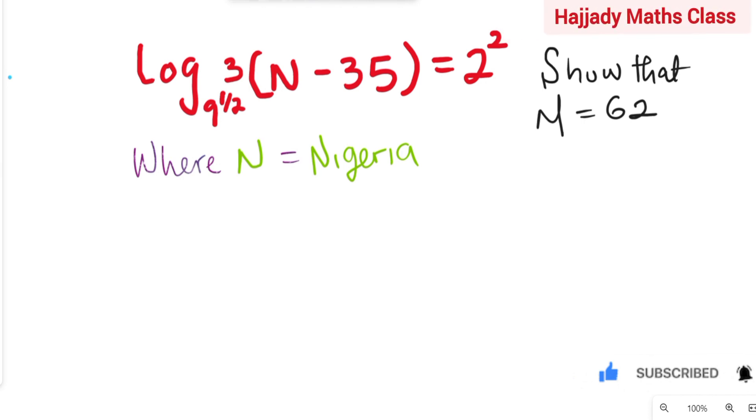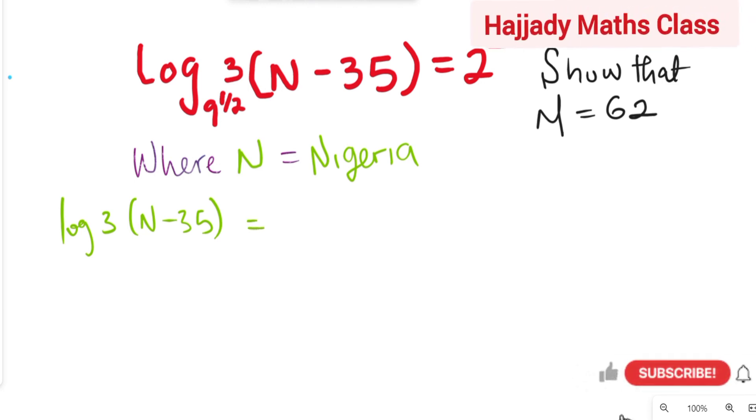So, we want to show that N is 62, where N is the same thing as Nigeria. So, we have here that log 3(N - 35) equals 2 raised to power 2, which is the same thing as 4. And the base here is 9 raised to power half.